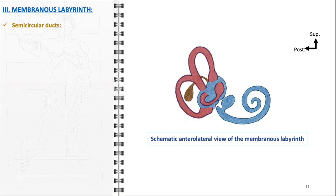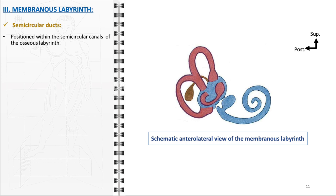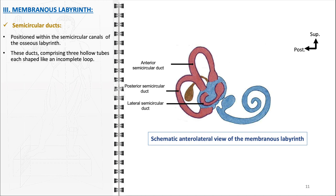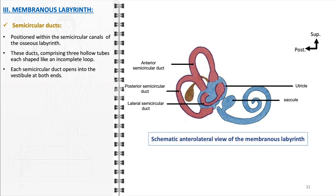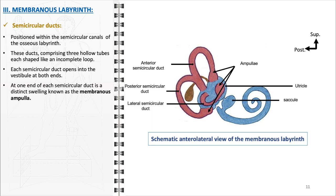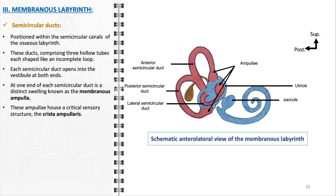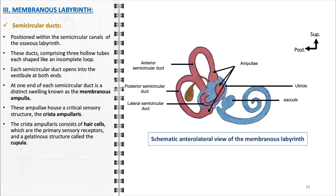The semicircular ducts, integral components of the membranous labyrinth, are strategically positioned within the semicircular canals of the osseous labyrinth. Comprising three hollow tubes each shaped like an incomplete loop, they detect rotational movements of the head in three different planes: horizontal, vertical, and sagittal. Each semicircular duct opens into the vestibule at both ends, allowing for the continuous flow of endolymph. At one end of each duct is a distinct swelling known as the membranous ampulla, housing the crista ampullaris — a sensory structure consisting of hair cells and a gelatinous structure called the cupula. As the head rotates, inertia causes endolymph to deflect the cupula, bending the hair cells and generating nerve impulses transmitted to the brain via the ampullary nerve branches, providing information about the direction and speed of head movements.